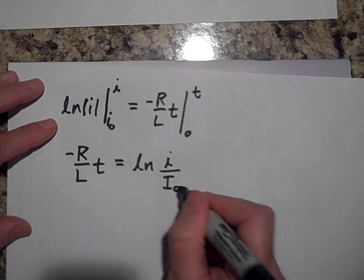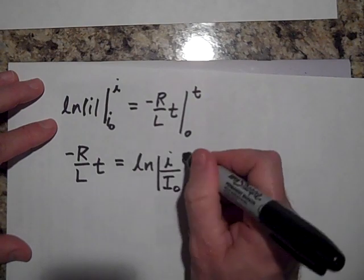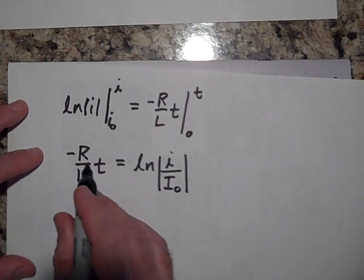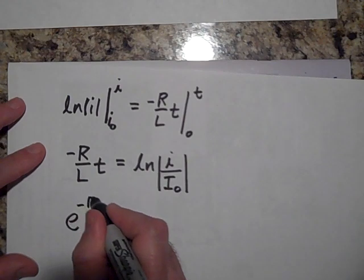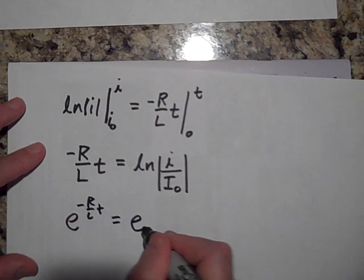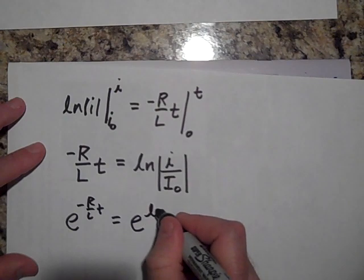Let's raise e to this. Since these are equal to each other, e raised to this power should equal the same as e raised to this part, raised to this. And so these are inverses of one another, so you're going to get just I over I naught.